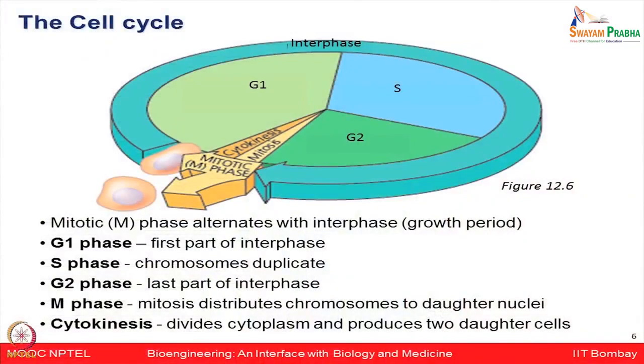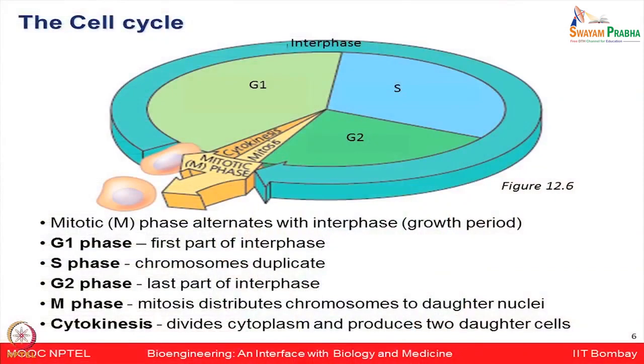The G1 phase is the first part of interphase; S phase is where chromosomes get duplicated. G2 phase is the last part of interphase, and M phase is where mitotic division happens and distributes the chromosomes to daughter nuclei. In cytokinesis, the cytoplasm gets divided to form two daughter cells, each containing the same cytoplasm, now bifurcated from the parent cell.